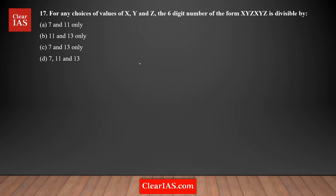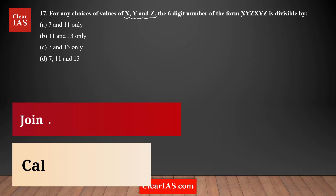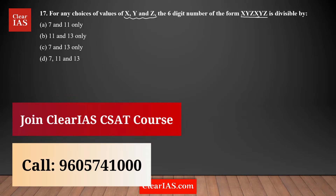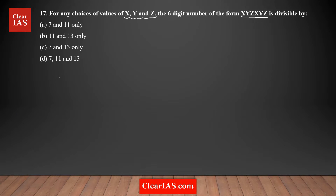This question is based on divisibility rules. For any choice of values x, y, z, there is a six-digit number of the form xyzxyz — the same three digits repeated. The question asks which of the given options divides xyzxyz. The answer choices include 7, 11, and 13. There is no particular divisibility rule for 7 or 13, but there is a rule for 11, so we can use that here.